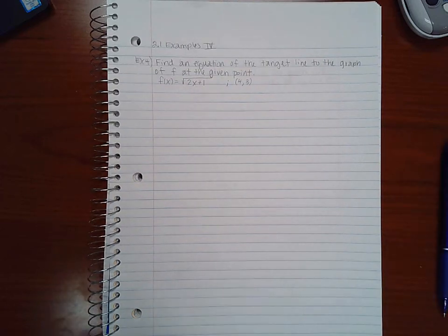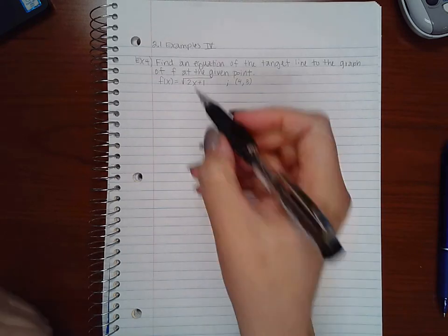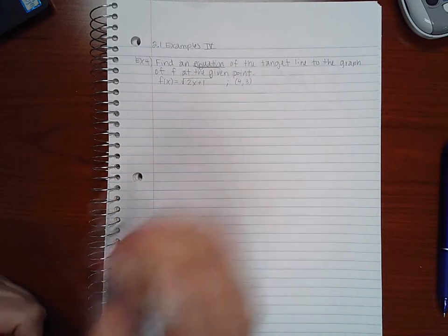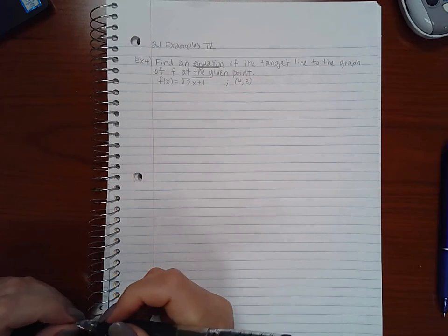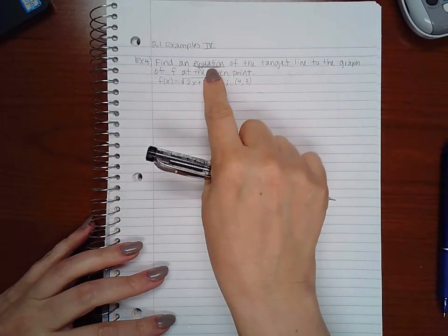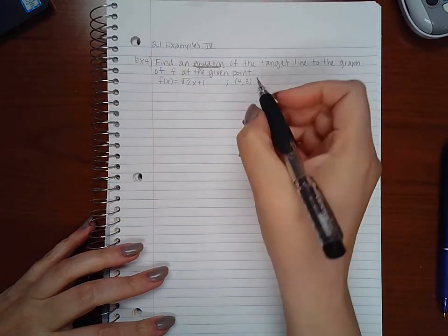Okay, in this video we will cover examples part four of section 2.1. Example four says find an equation of the tangent line, so this time they want me to find the equation of the tangent line to the graph of f at the given point. Since they want the equation, the first thing I need is the slope. I have the point, I need the slope in order to get an equation.